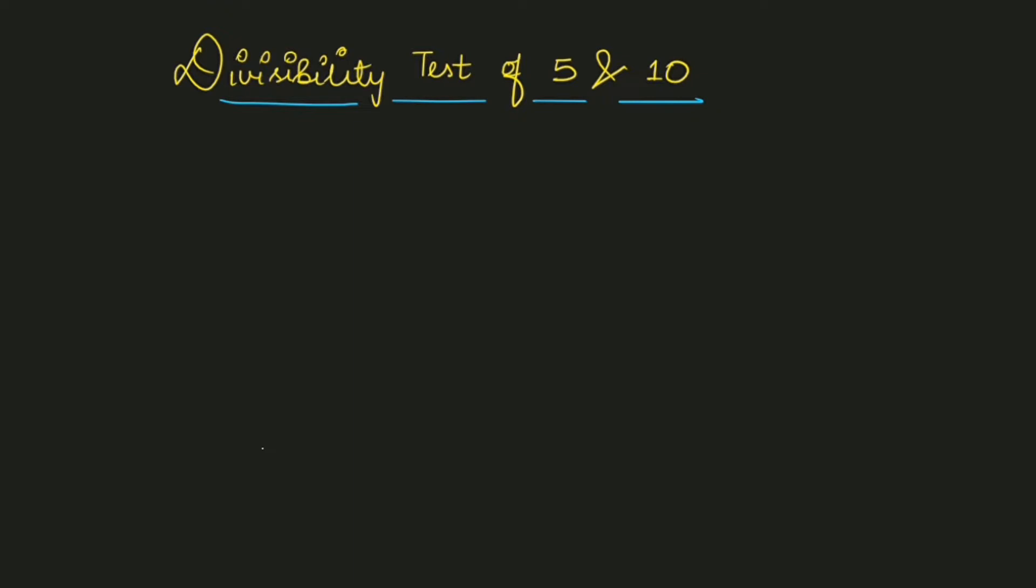When a small number comes, you can easily divide it by 5 or 10. But if you have a big number like 4, 5, 6, or 7 digits, how do you check if it will be completely divided without leaving any remainder?